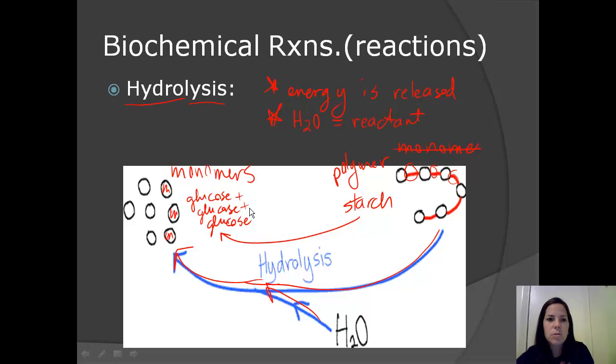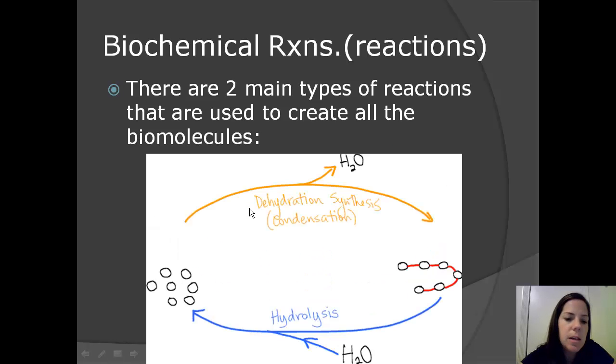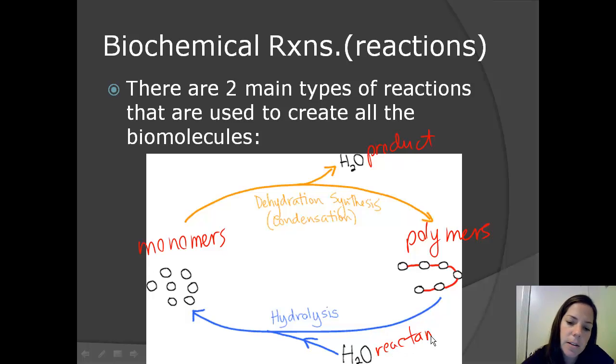So that takes us through the biochemical reactions, the two main ones. So there's two main ones, but you can see that they are both complement one another. So the monomers, when you want to create a complex molecule, get all added together. The water is taken out as a product. And then you have a polymer, a complex molecule. If you want to create monomers from a polymer, then the water is a reactant, and that needs to be added to the chemical equation, and then you end up with monomers.